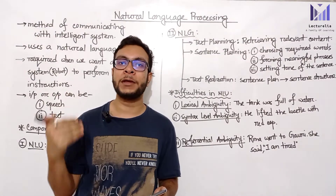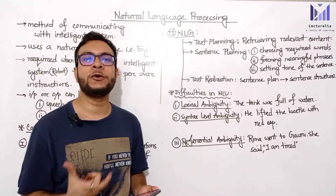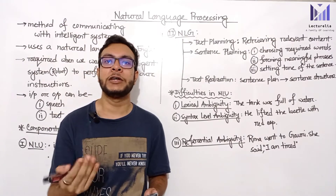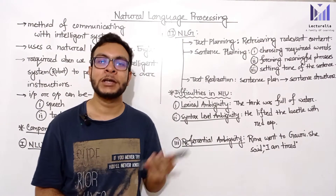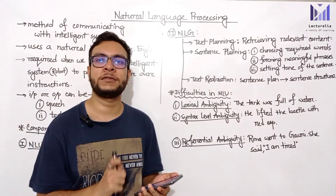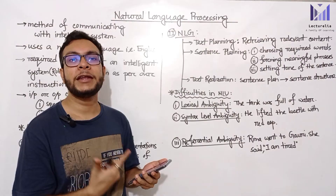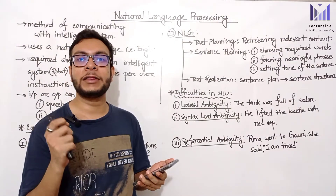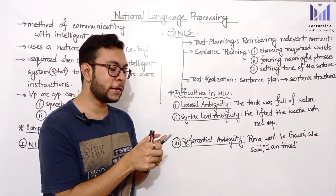To understand all the facts about Natural Language Processing, let's start with a real-life example. Look at your phone — if you have a normal Android phone, you have Google Assistant. If you have an iPhone, you have Siri. These are voice assistants that we communicate with. Let's see how that works.